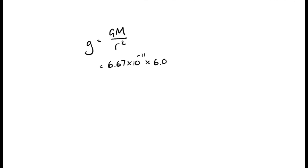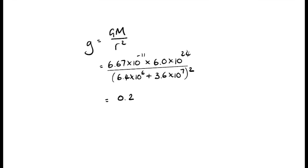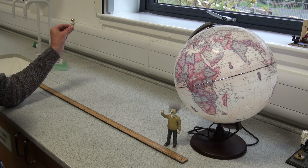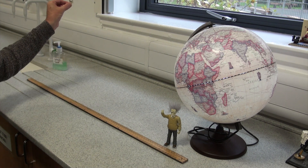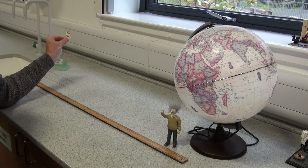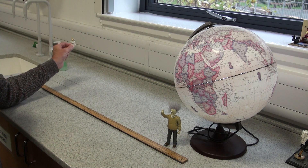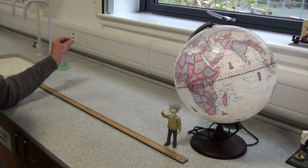So it's getting smaller. As you move away from the Earth, the gravitational field strength decreases and decreases and decreases. The question is, how far away would you have to go for the Earth's gravitational field strength to be zero?